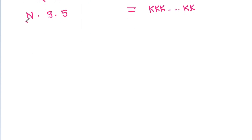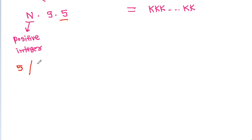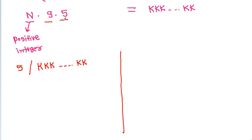Since n is a positive integer and n times 9 times 5 equals k, k, k, k, 9 must also divide the number k, k, k, k.